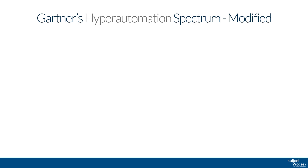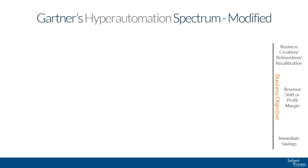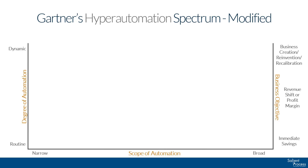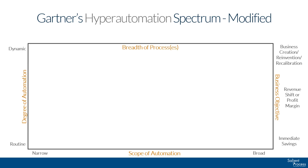The way this works is we have business objectives, or your digital ambition, along the right axis, with our scale going from immediate savings on the bottom up to business creation, reinvention, and recalibration on the top. Along the left axis, we have our degree of automation, which scales from routine to dynamic. Along the bottom axis, we have the scope of automation, which goes from narrow to broad. And then across the top axis, we have something Salient added: the breadth of processes, which scales from a single activity to a process or multiple processes, up to a value chain. We added this because we felt it was critical to highlight the scope of processes the different tools in hyperautomation can cover.